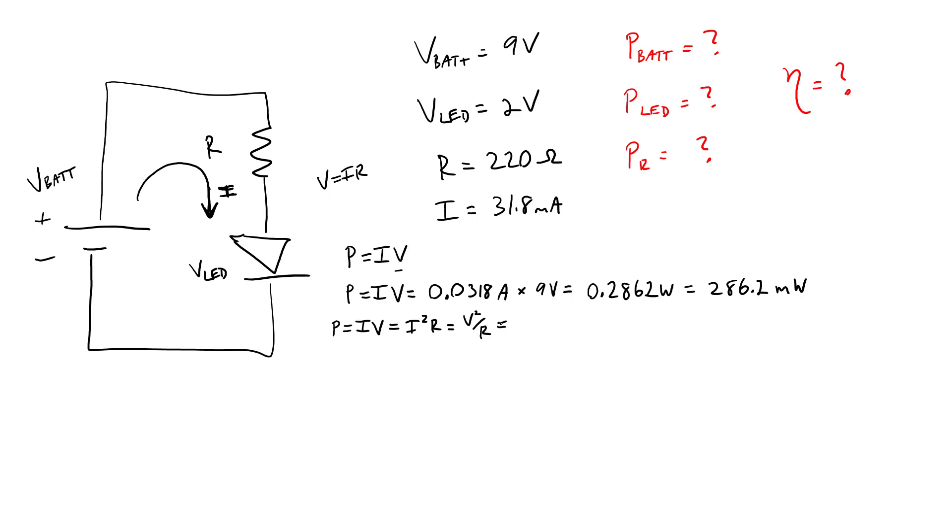In this case, I'm going to use the I squared R version. So I have 0.0318 amps squared times 220 ohms. And that gives a power of 0.222 watts or 222 milliwatts dissipated as heat by the resistor.